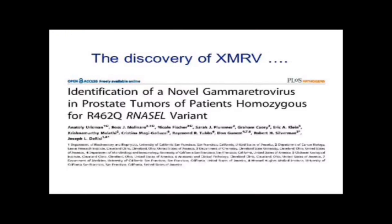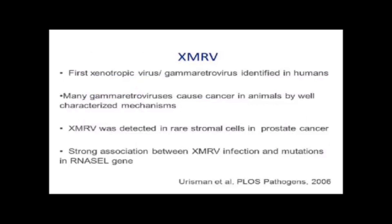Here's the seminal paper on the discovery of XMRV, published in 2006 from the labs of Bob Silverman, Joe DiRisi, and Don Ganem. They identified a novel gamma retrovirus in prostate tumors of patients who had a variation in their RNase L gene. It was the first xenotropic and gamma retrovirus identified in humans. Many gamma retroviruses are known to cause cancer in animals. This paper discovered XMRV in rare stromal cells in prostate cancer and showed a strong association between XMRV infection and mutations in the RNase L gene.